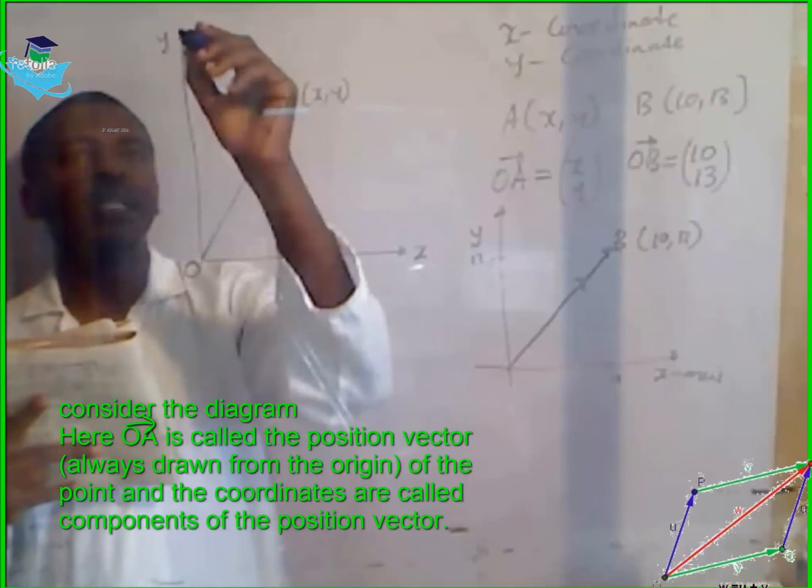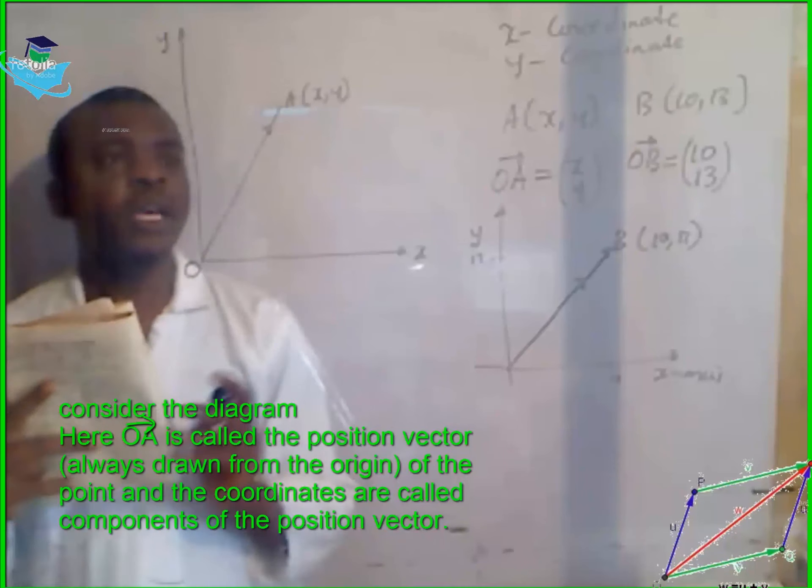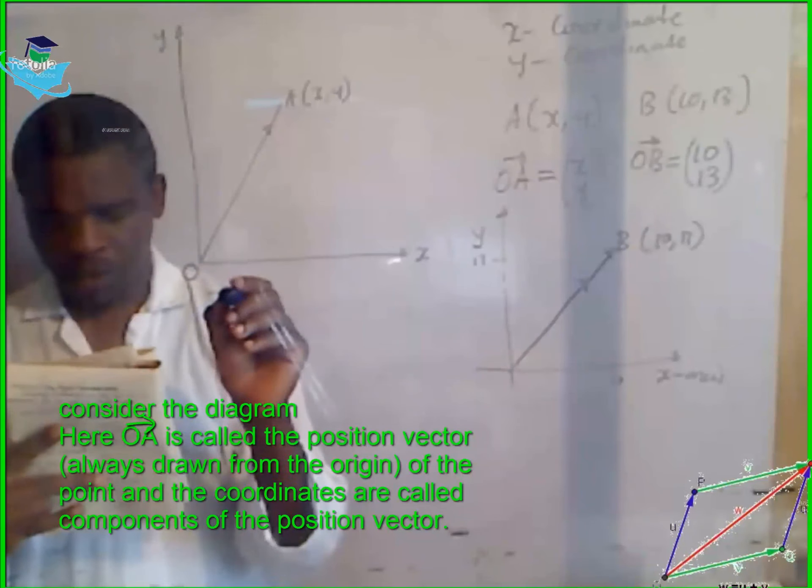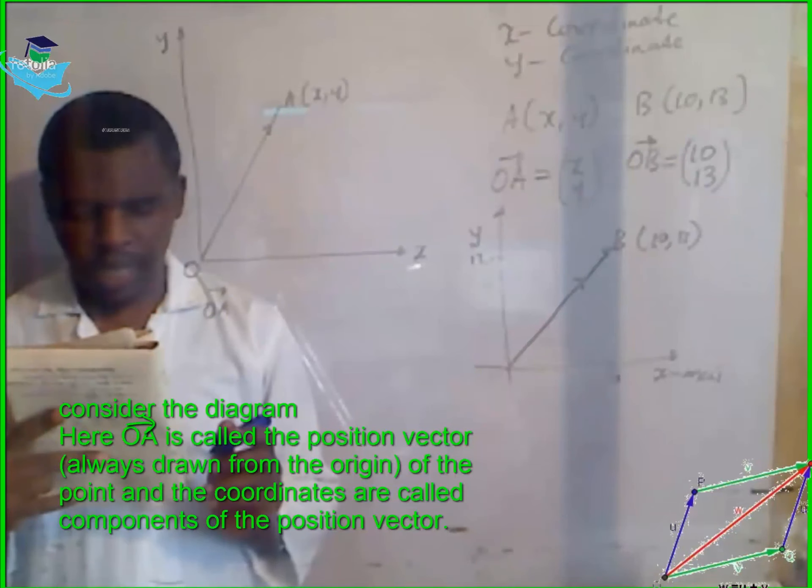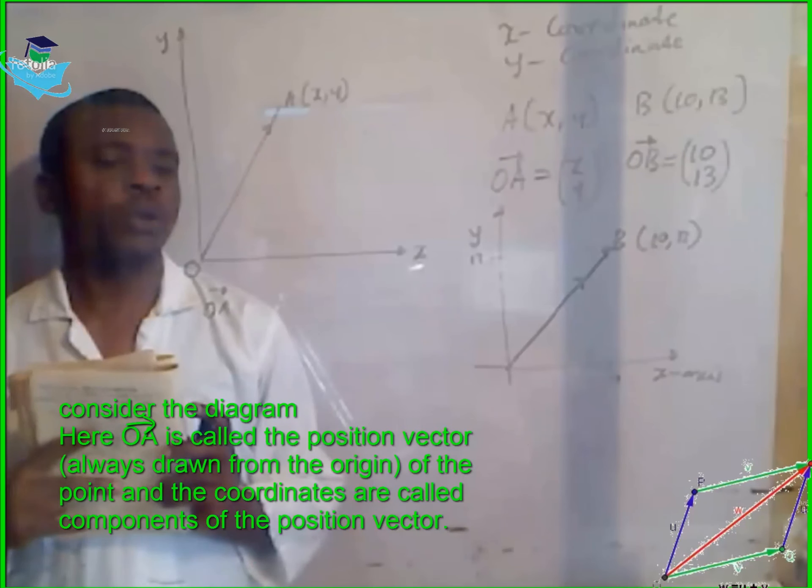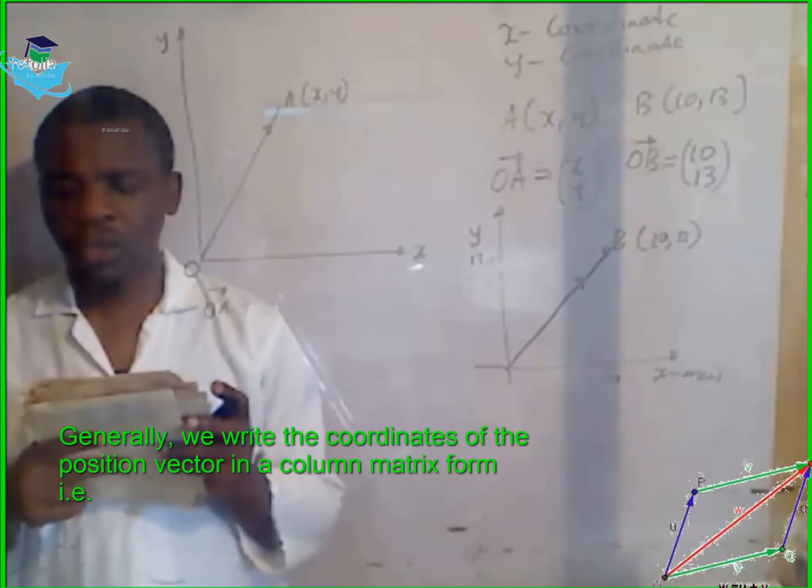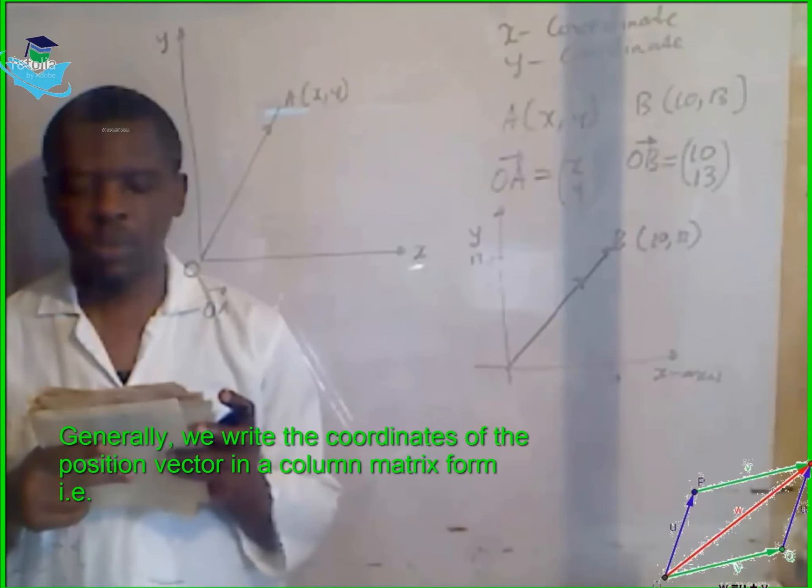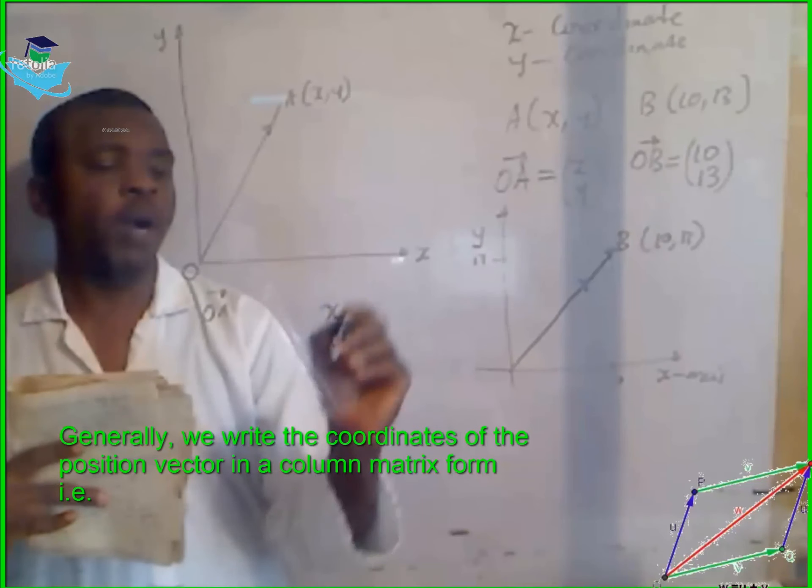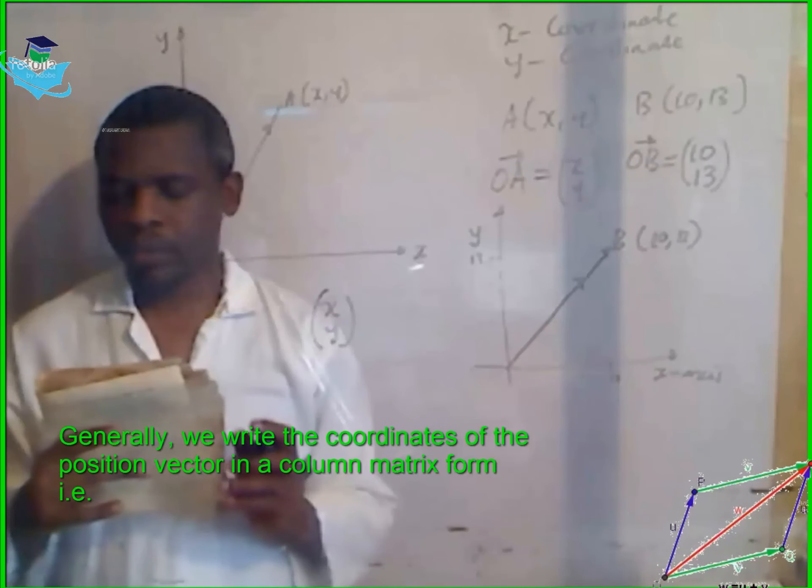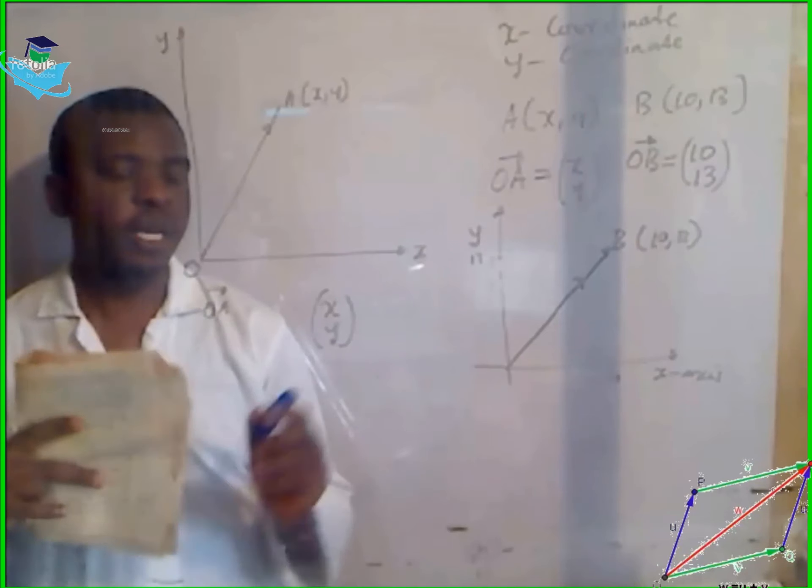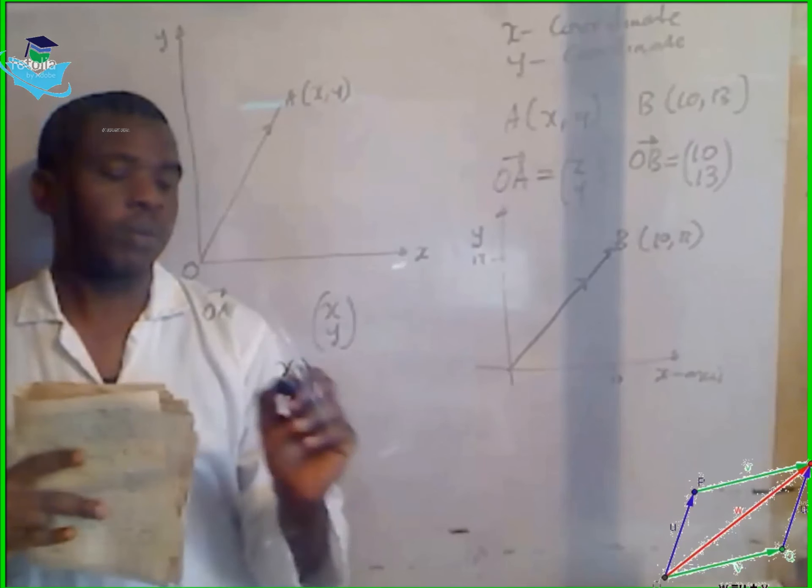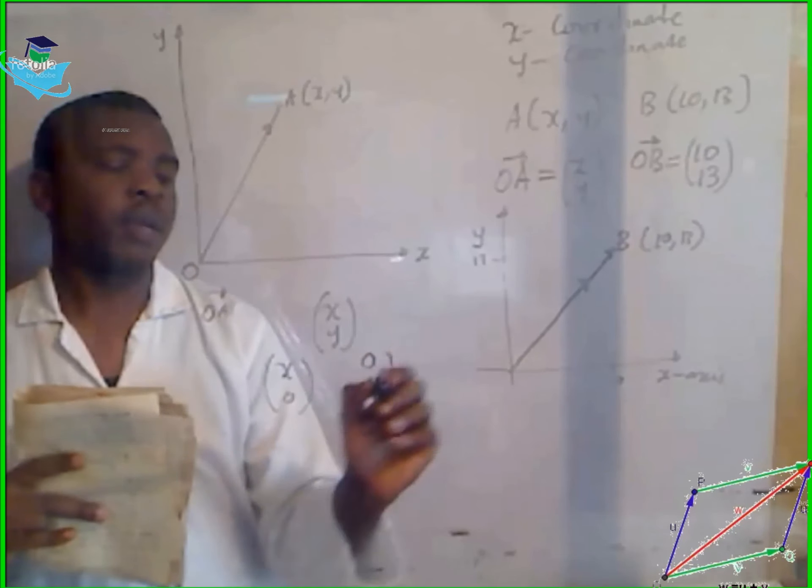Consider this diagram. Here, OA is called the position vector, always drawn from the origin to the point, and the coordinates are called components of the position vector. Generally, we write the coordinate of the position vector in column matrix form: x, y. And the components in the x and y directions are x0 and 0y, respectively.